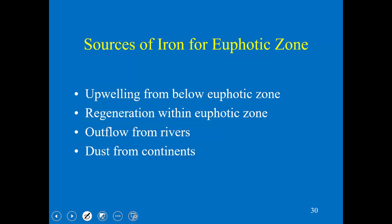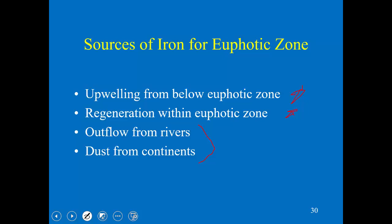Eventually it was shown to be correct. The sources of iron in the photic zone include upwelling, some regeneration from grazers, and if you're near land, outflow from rivers and dust from continents. Dust from continents is usually the biggest source of iron. This satellite image shows dust coming off the Sahara Desert, illustrating why there are high amounts of iron in the Atlantic Ocean.